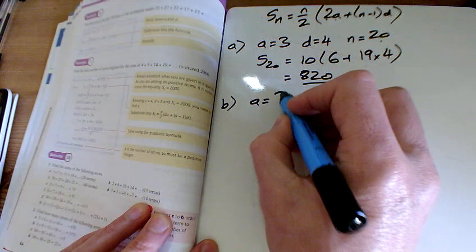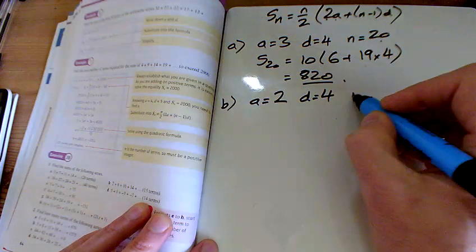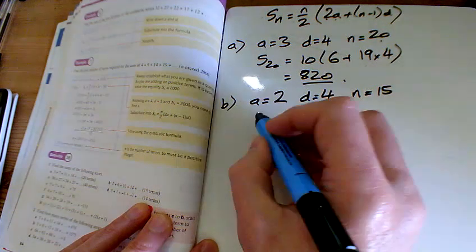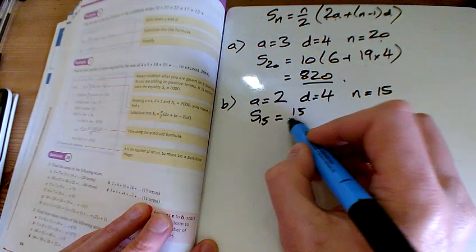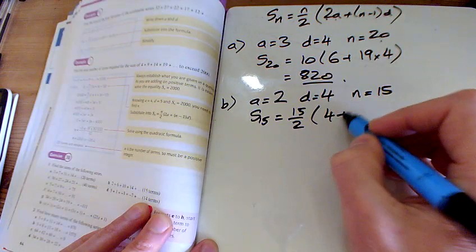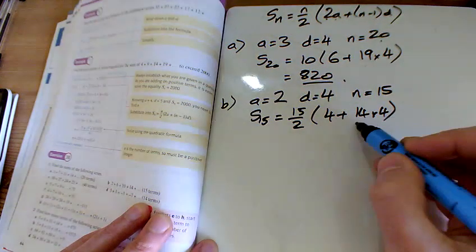But for the second one, we've got 2 for the first term. The difference, again, of 4, it goes up 4 each time. And this time, n is 15. And so the sum of 15 of them is 15 over 2. 2a's, 2 times 2 is 4, plus 14 times 4. Tap that in the calculator. You get 60. 60 times 7.5 is 450 for part b.